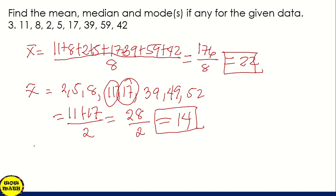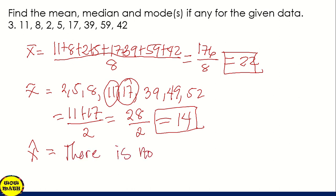Next is the value of mode. We count which value in our data appears the most. Since in this case no value appears more than once, there is no mode.